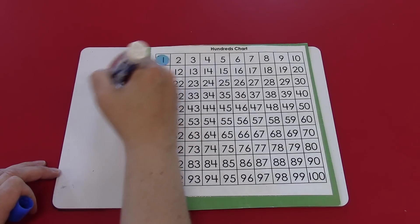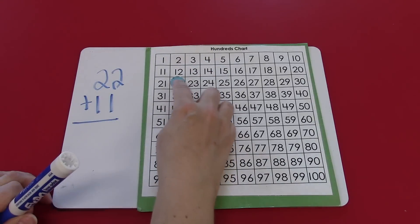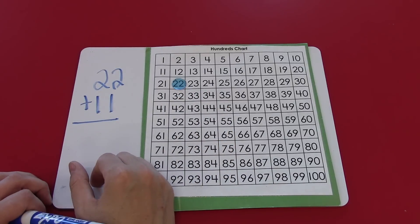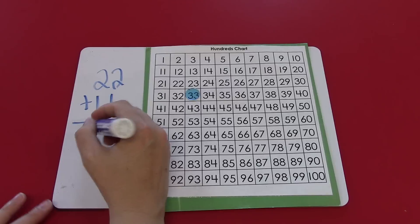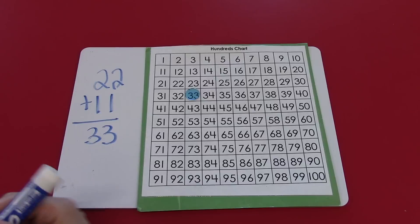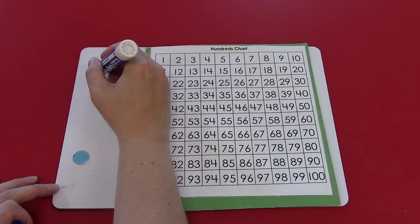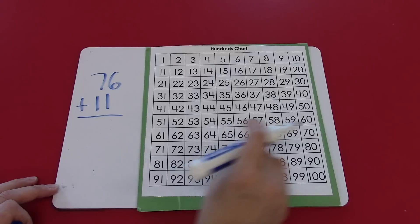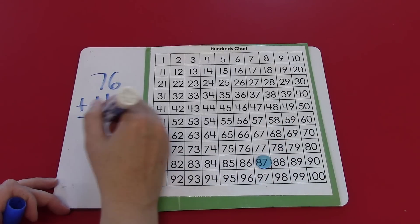22 plus 11. I could go 10, 11, or if I remember diagonally to the right is 11, I can do it in one move. 11 more than 22 is 33. Let's try another one. 76 plus 11. Diagonally to the right, 87.